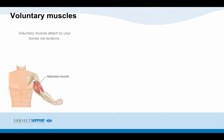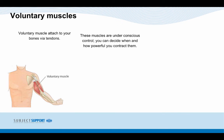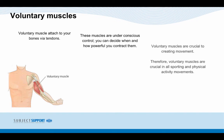Voluntary muscles attach to your bones via tendons. These muscles are under conscious control — you can decide when and how powerfully you contract them. Voluntary muscles are crucial to creating movement and therefore are crucial in all sports and physical activity movements.